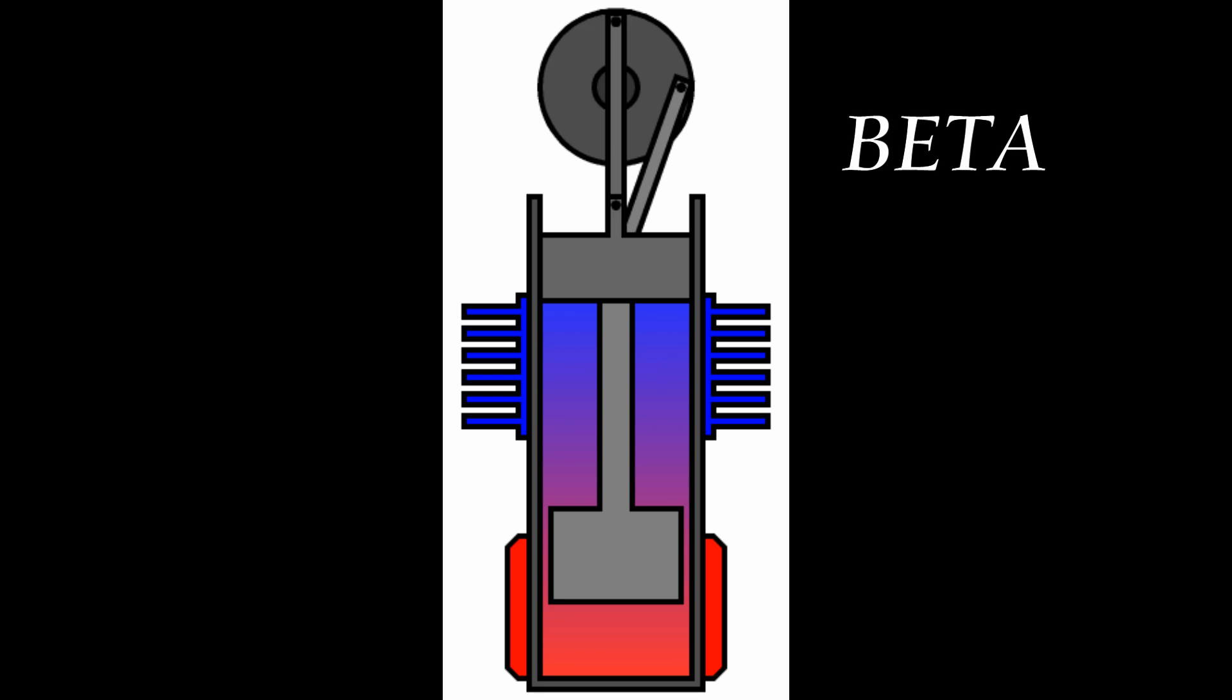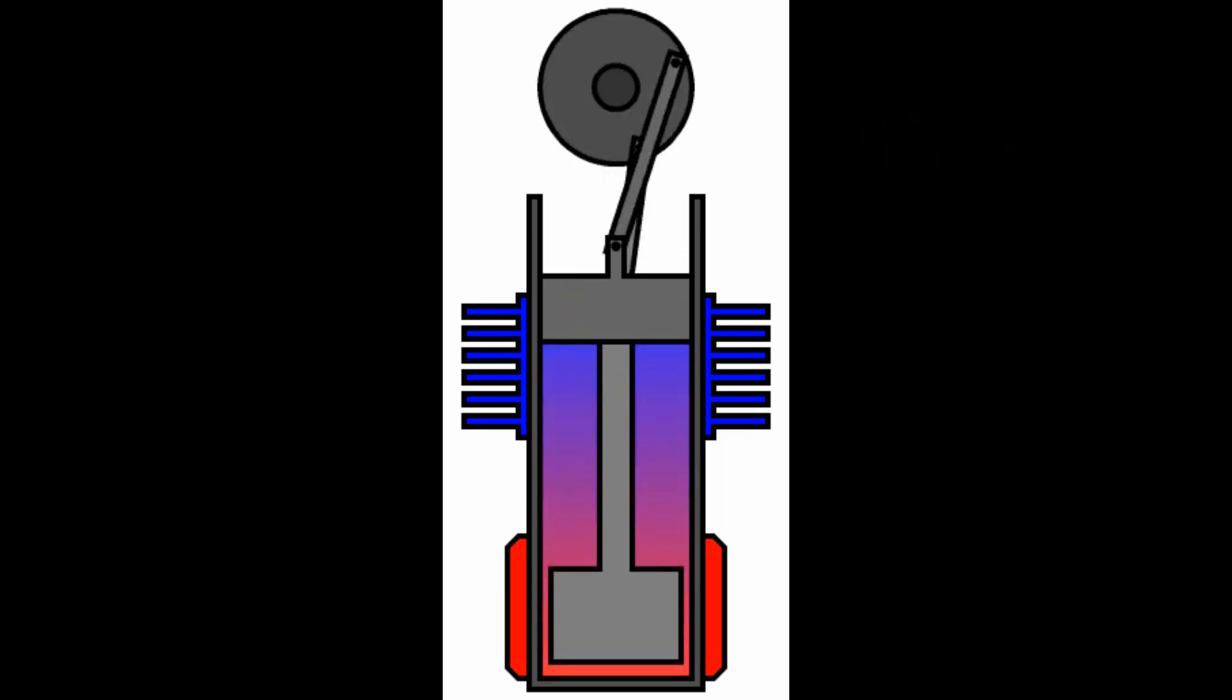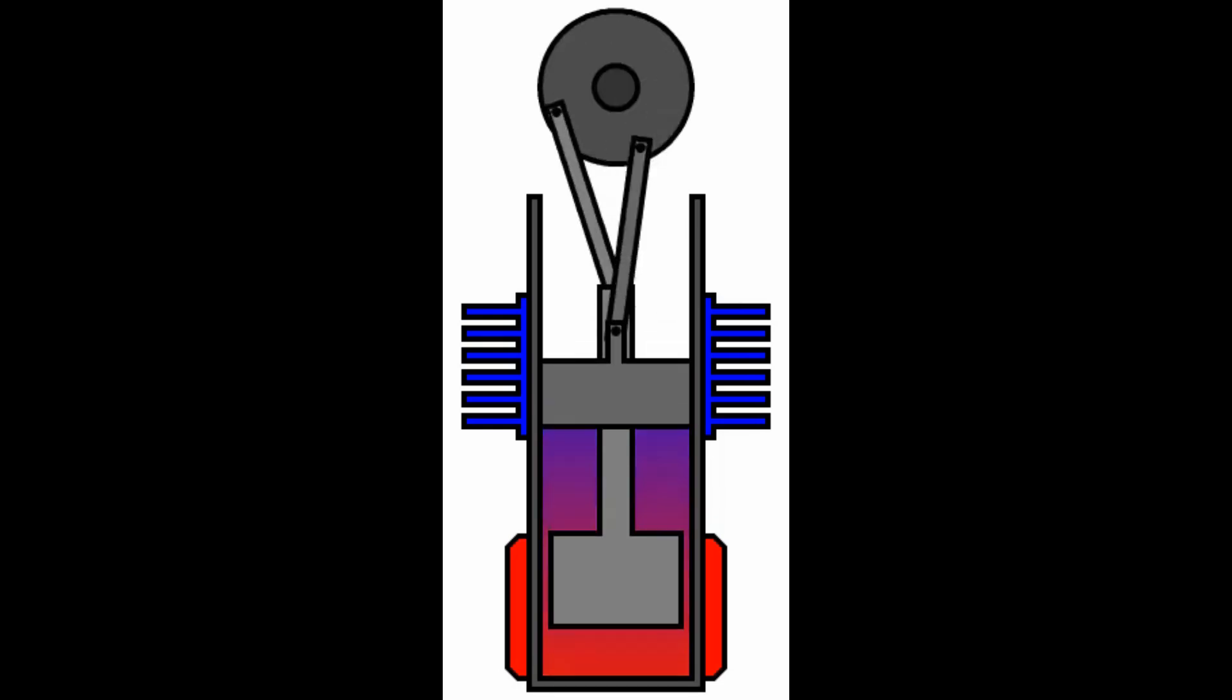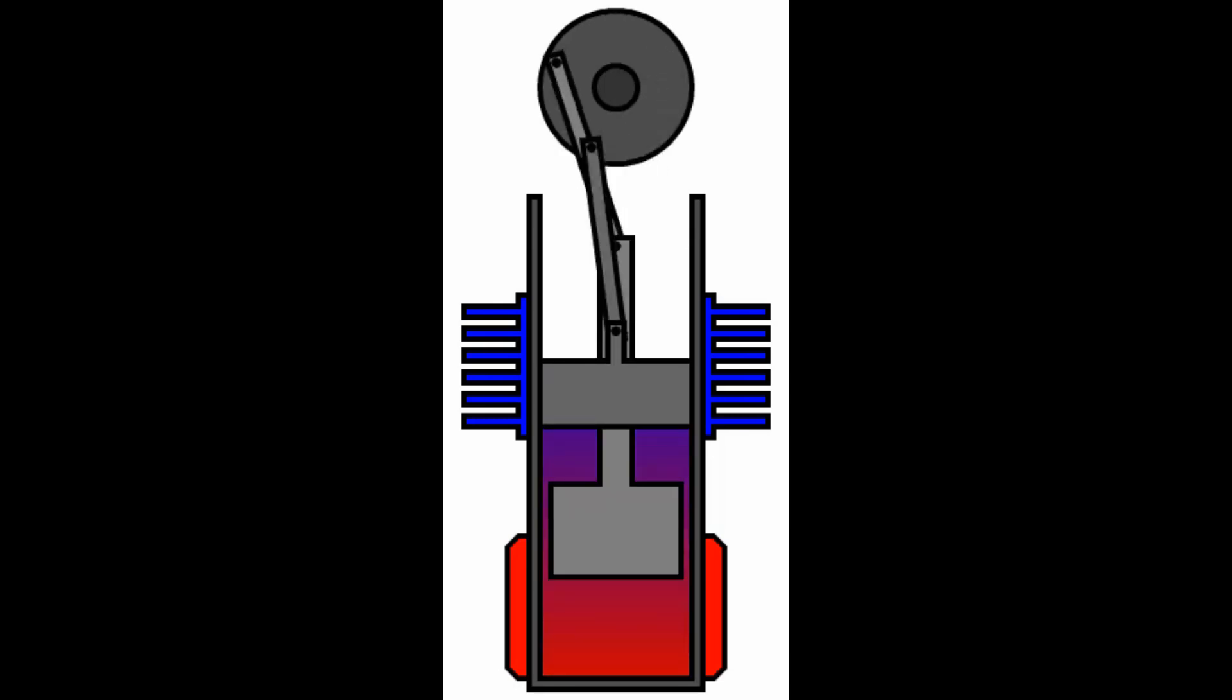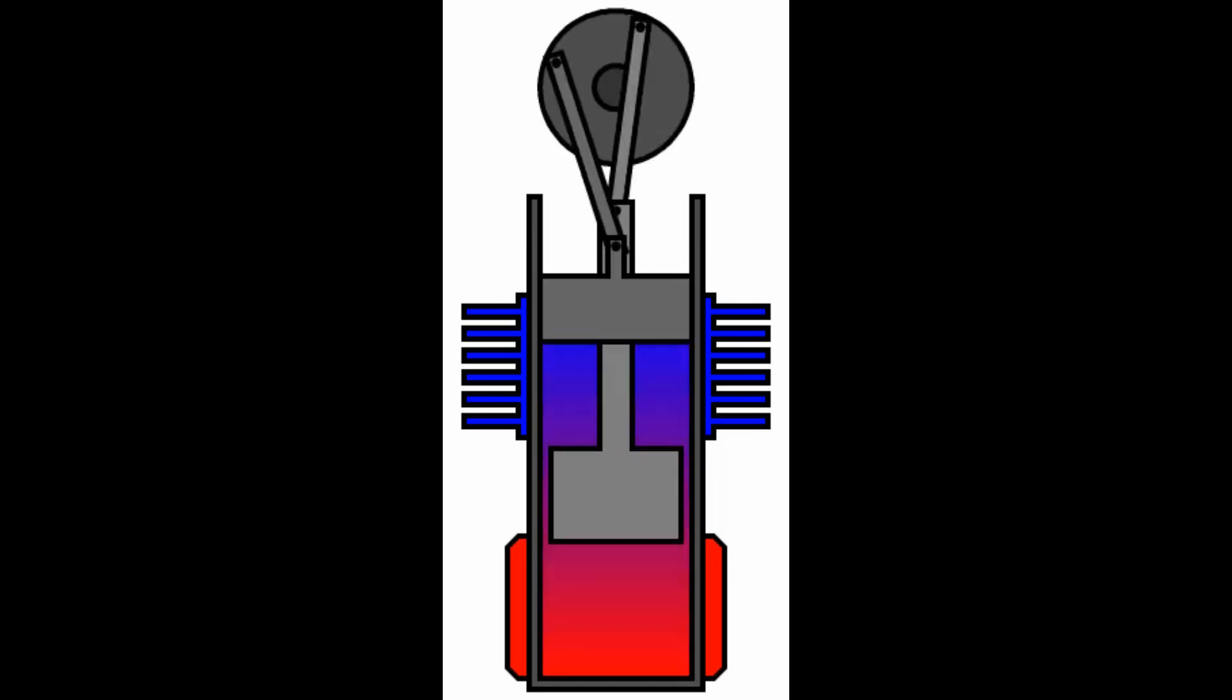The third type of engine is a beta style engine where the displacer and the power piston are in the same cylinder. There are some challenges with this construction because one of the connecting rods has to pass through one of the moving pistons. This is the style engine that my engine is.